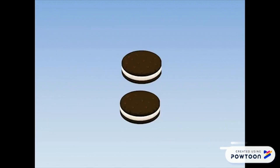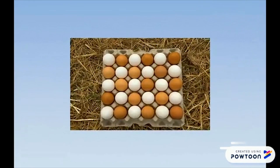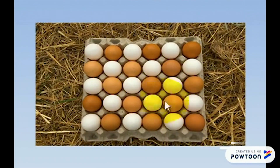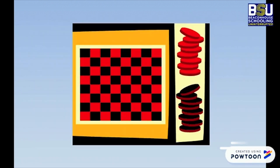Now let's find the pattern in these cookies: black, white, black, black, white, black. Can you see the pattern in this egg tray? White, brown, white, brown, white, brown. We can even see patterns in games.